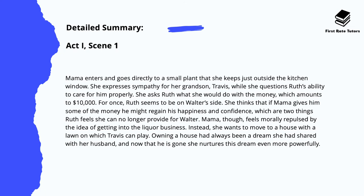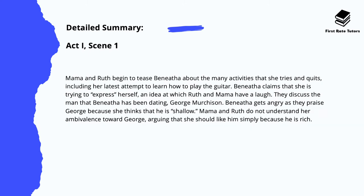Mama then enters and goes directly to a small plant that she keeps just outside the kitchen window. She expresses sympathy for her grandson Travis while questioning Ruth's ability to care for him properly. She asks Ruth what she would do with the money, which amounts to ten thousand dollars, and for once Ruth seems to be on Walter's side — she thinks that if Mama gives him some of the money, he might regain his happiness and confidence, which are two things Ruth feels she can no longer provide. Mama, however, feels morally repulsed by the idea of getting into the alcohol business. Instead, she wants to move to a house with a lawn on which Travis can play. Owning her own house has always been a dream she shared with her husband, and now that he is gone, she nurtures that dream even more powerfully.